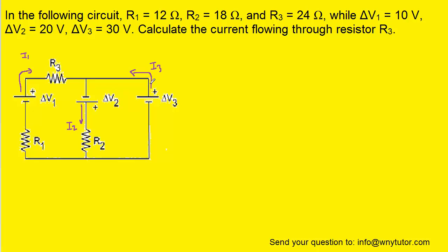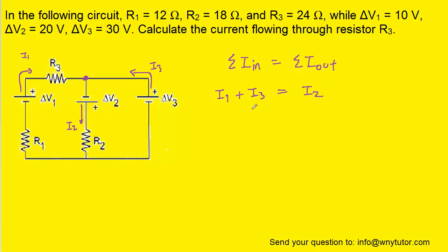So step one is complete. The next step is to apply Kirchhoff's junction rule. To do that we select a junction in the circuit — a point where the circuit branches off. We can see that currents I1 and I3 are entering that junction, whereas current I2 is exiting it. The total current going into a junction equals the total current going out, so we write: I1 plus I3 equals I2.